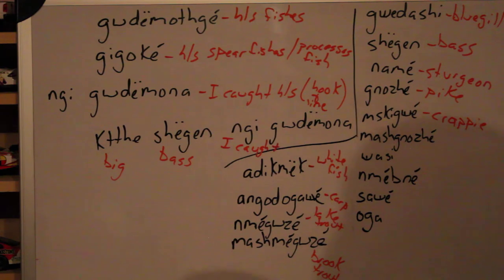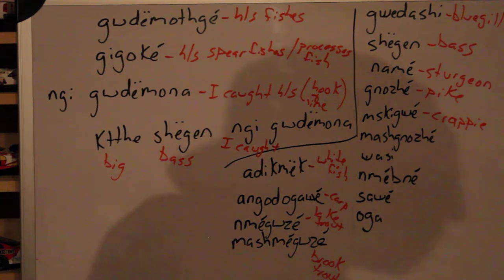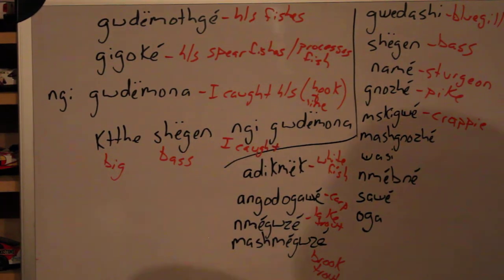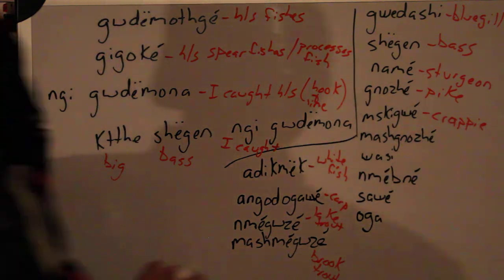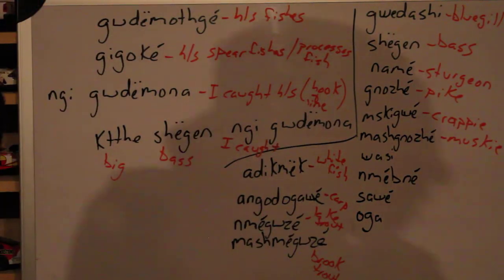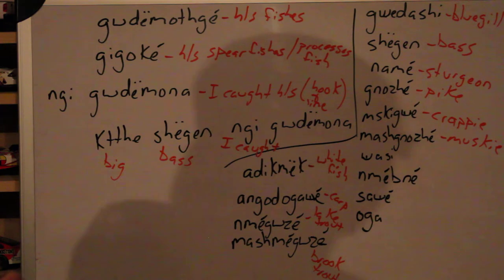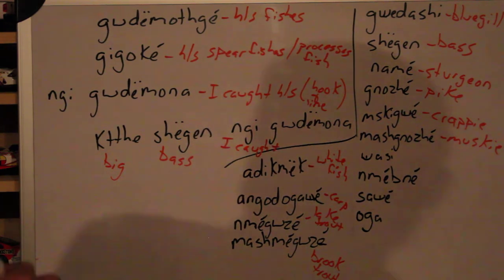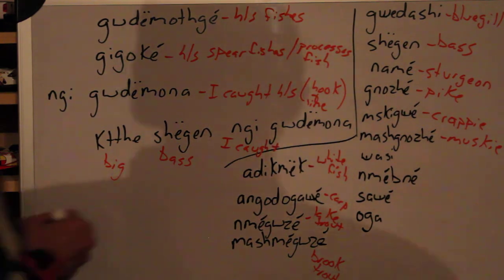Below that we have mskégwazé — mskégwazé is a crappie. I've also heard mskégwazé. Below that we have wasi — wasi is a bullhead catfish.